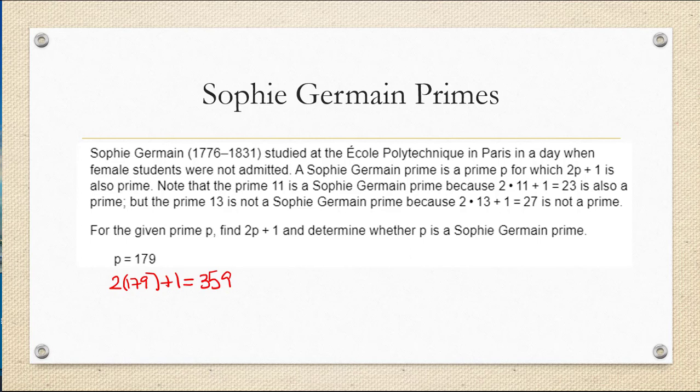So 2 times 179 plus 1 is 359. In order for 179 to be a Sophie Germain prime, we need to determine that 359 is also a prime. How can we do that?